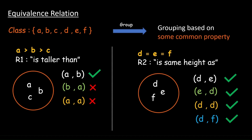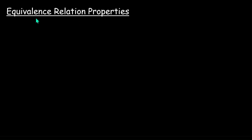So let's formally discuss what an equivalence relation is and what its different properties are. An equivalence relation must satisfy three properties. Let's look at what those properties are.